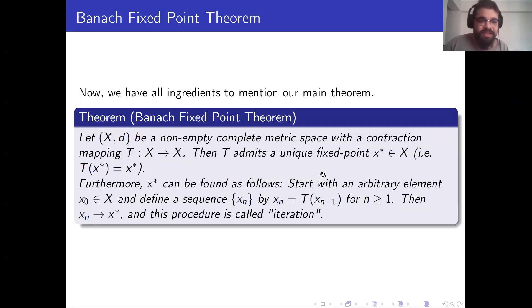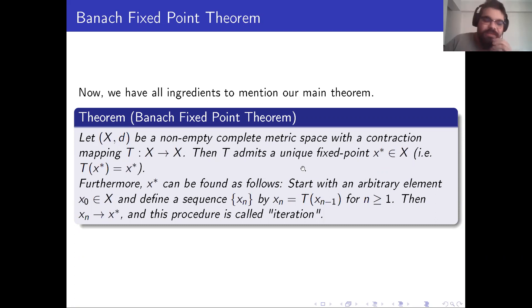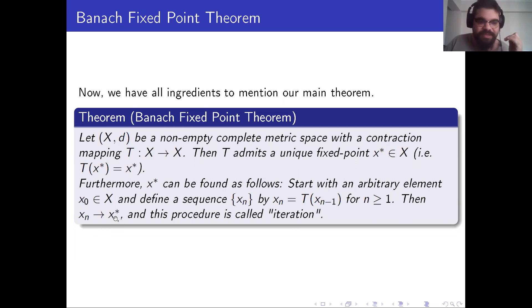Now we have all the ingredients to state our main theorem: the Banach fixed point theorem. This theorem says that if we have a complete metric space with a contraction mapping T, then T has a unique fixed point x*, meaning T(x*) = x*. We can find x* as follows: starting from any arbitrary element in our complete metric space X, we define a sequence where x_n = T(x_{n-1}). This iterative process will converge to x*.